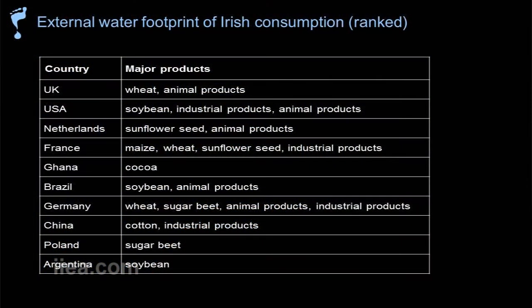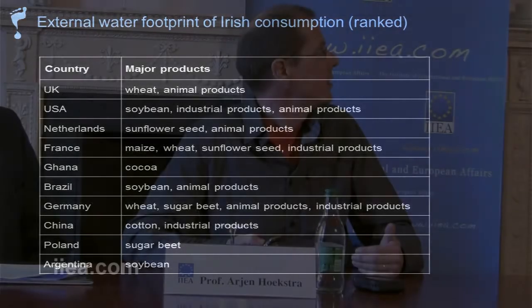If you look at what are the most important countries where Ireland has an external water footprint, they are listed here and ranked. The first one is the UK — that sounds obvious. But then the next one is the USA, because of import of soybean, industrial products, animal products. You also see strange countries like Ghana — because you like chocolate. Brazil and Argentina? That's because of soybean. China? Because of cheap industrial products, with a lot of pollution behind it.